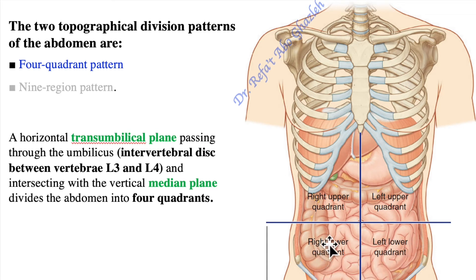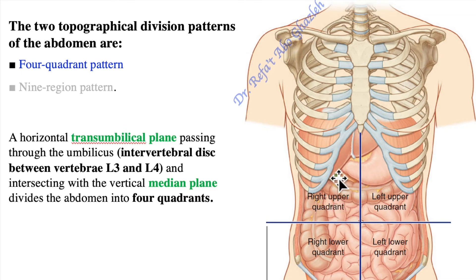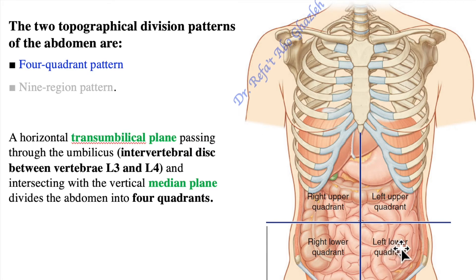Similarly, on the left side there is a left upper and left lower quadrant. This four-quadrant division, as well as the nine-region pattern, helps to localize different abdominal organs. For example, the fundus of the gallbladder is located in the right upper quadrant. In the right lower quadrant you will find the cecum and the appendix. On the left side, you will find the sigmoid colon in the left lower quadrant.